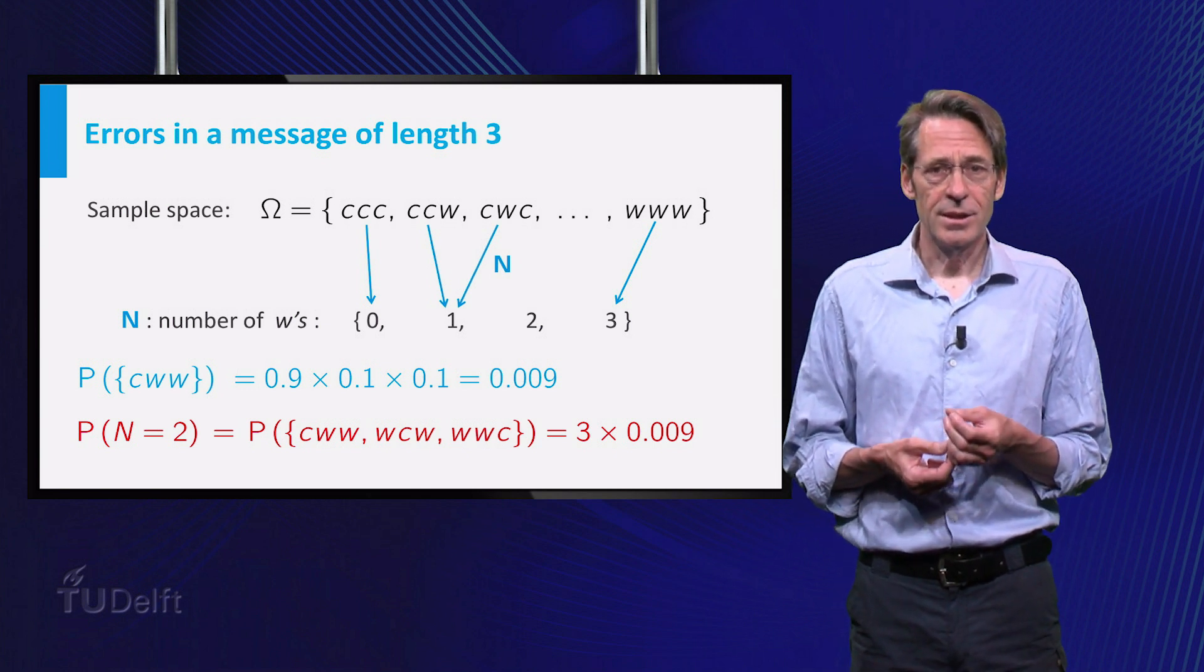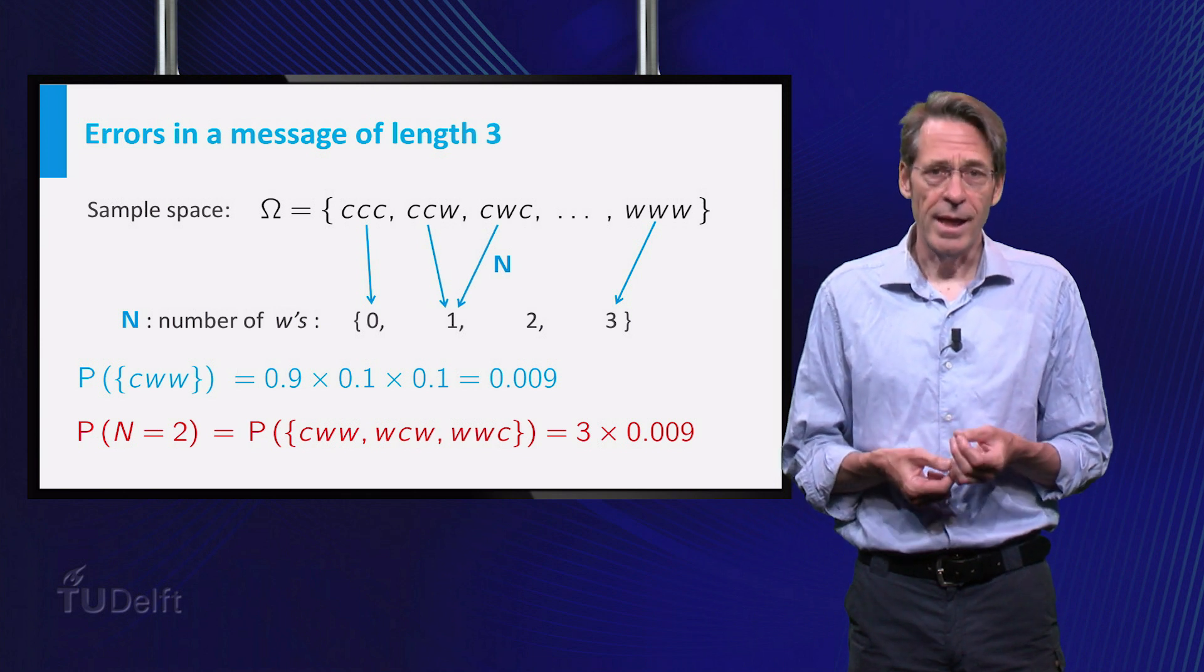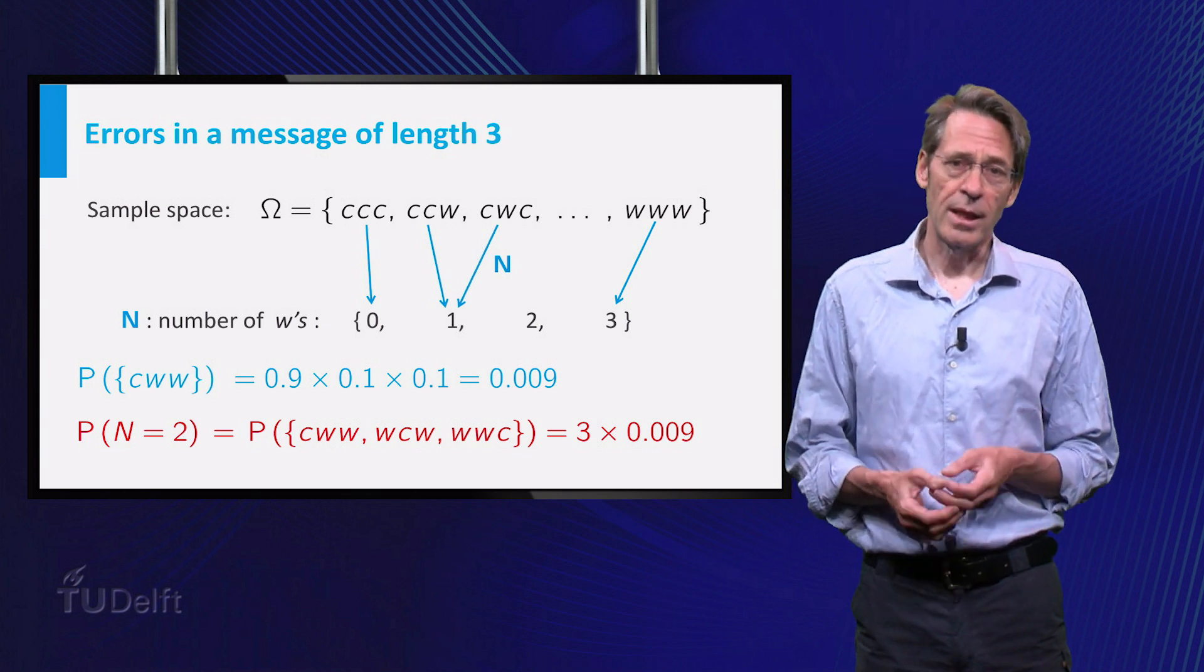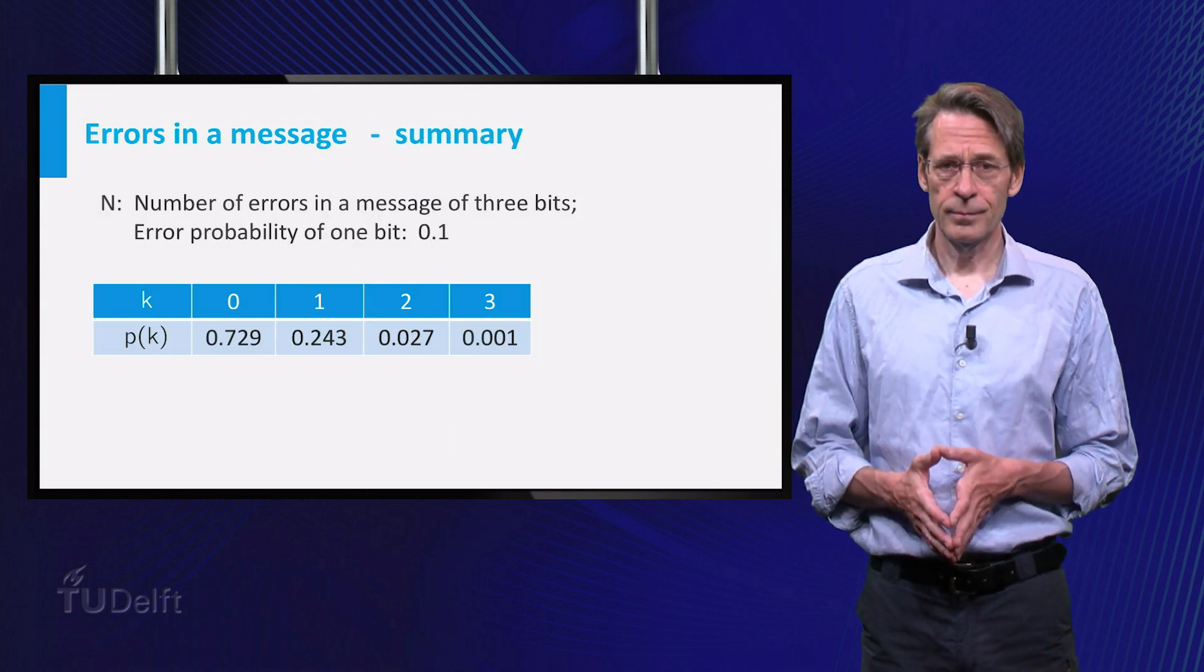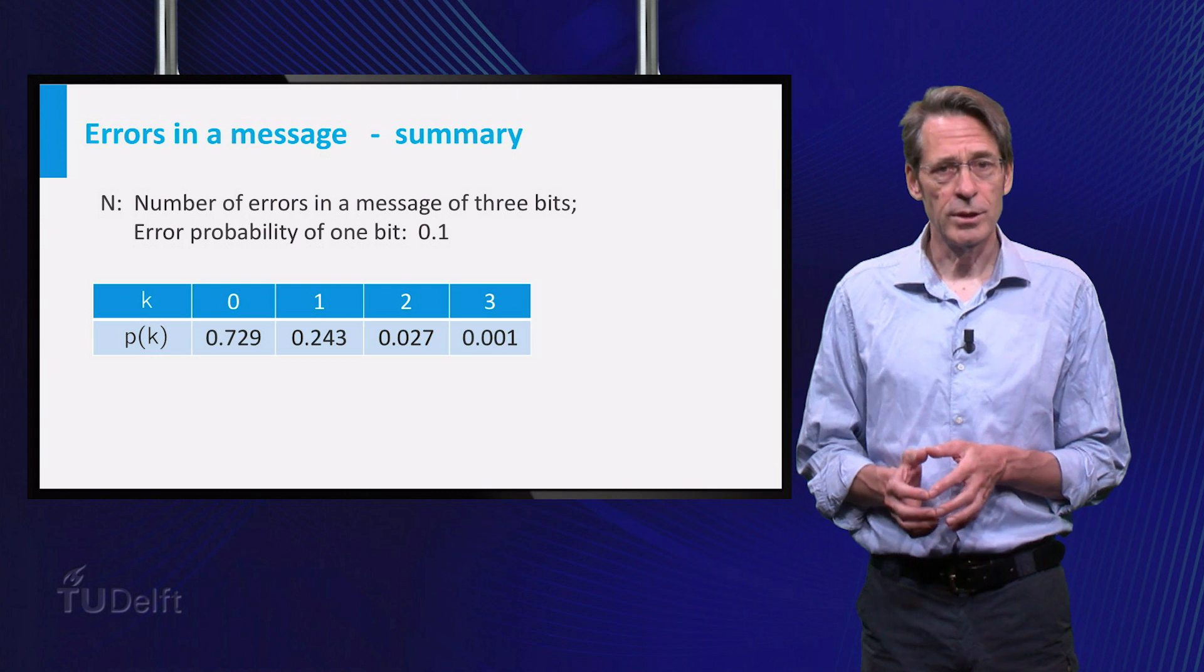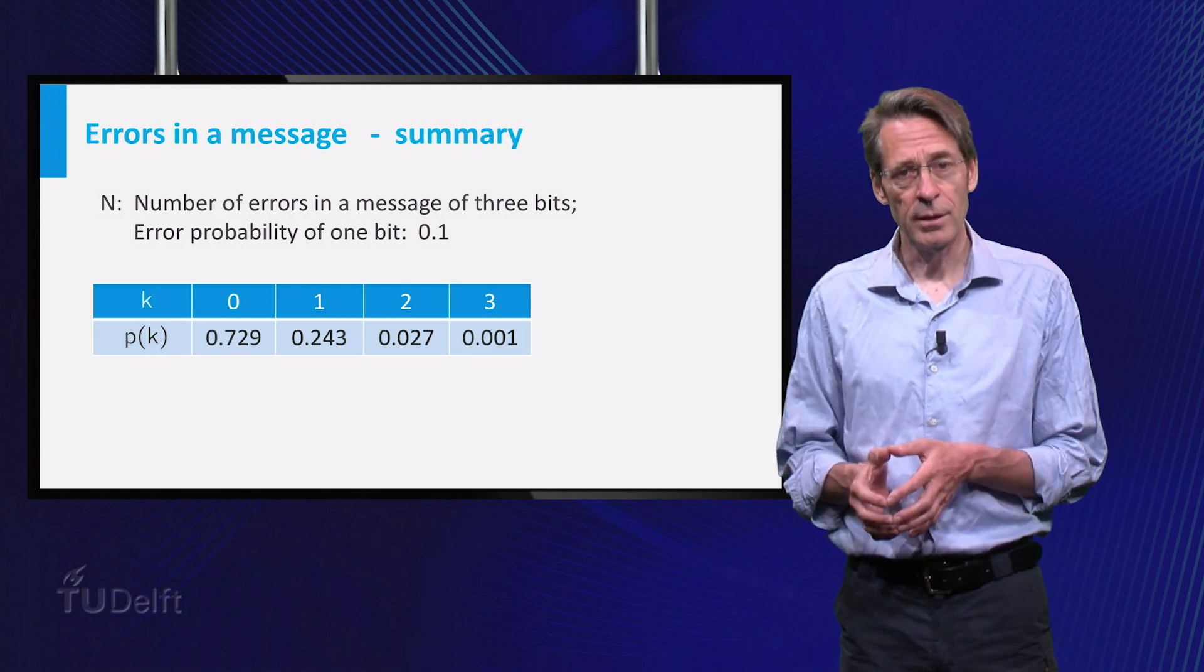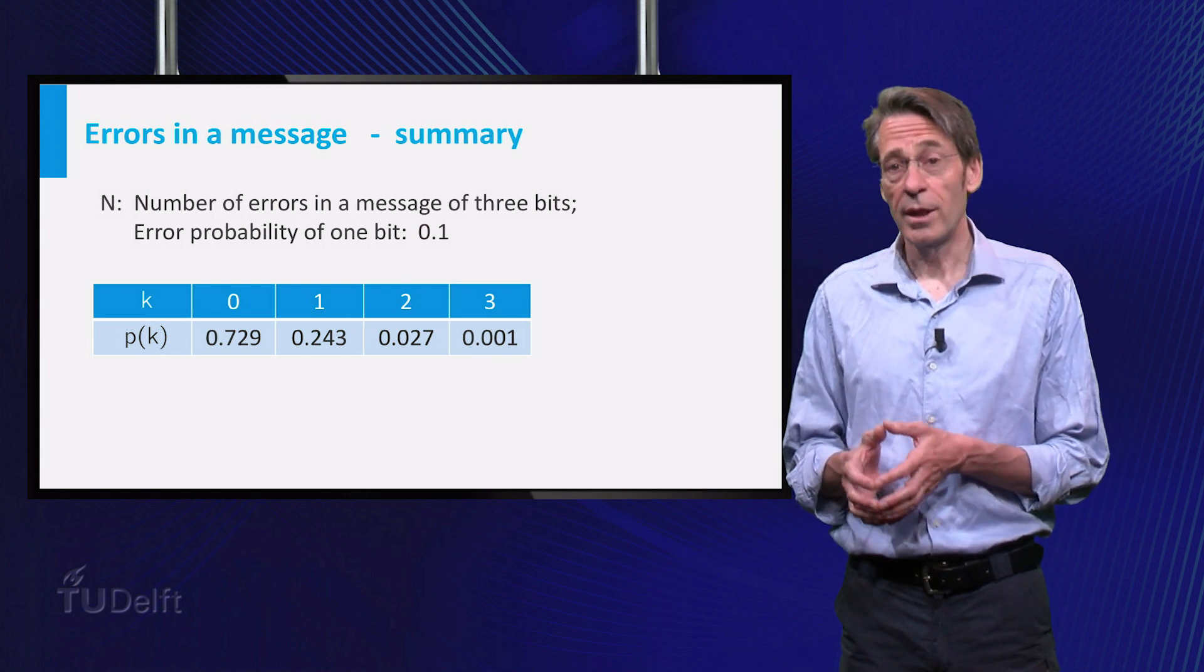The instances N equals 1 and N equals 3 are handled analogously, and putting everything together gives the table as shown. Again, the table summarizes the probability mass function P, which can also be shown graphically.